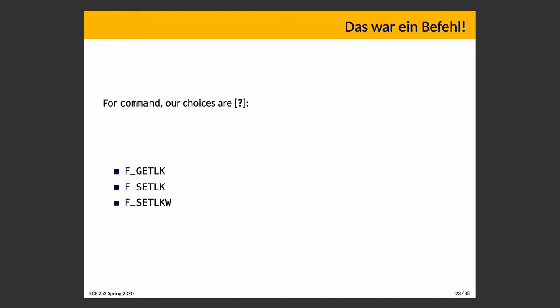F_SETLK sets the lock as described by the lock structure. If the lock cannot be acquired, fcntl returns an error and sets the errno variable — this is try-lock behavior. If you use F_SETLKW — the W is for wait — that is blocking behavior: we will wait until we acquire the lock before proceeding. You choose whichever behavior you need.